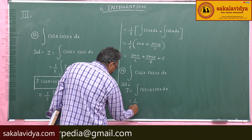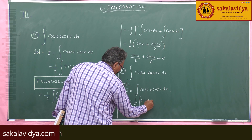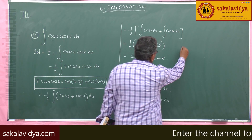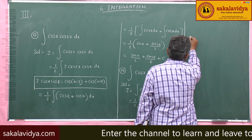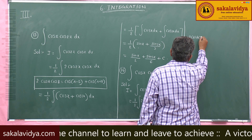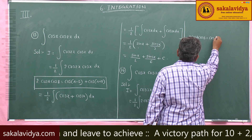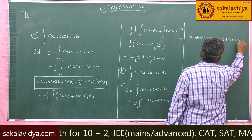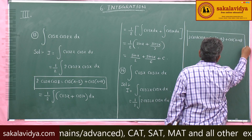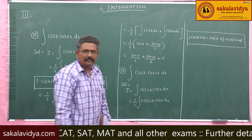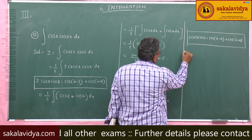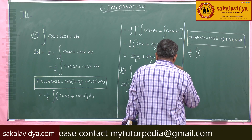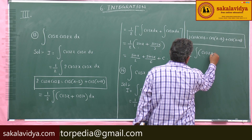This gives 1/2 integral of 2 cos 3x · cos x dx. Using the formula 2 cos A cos B equals cos(A minus B) plus cos(A plus B), this transformation gives 1/2 integral of cos(3x minus x) plus cos(3x plus x), which is cos 2x plus cos 4x.